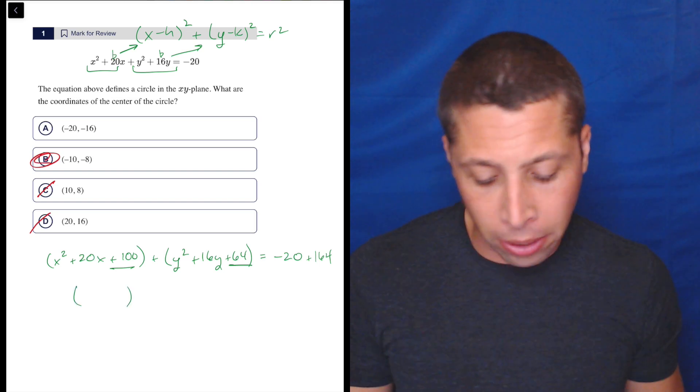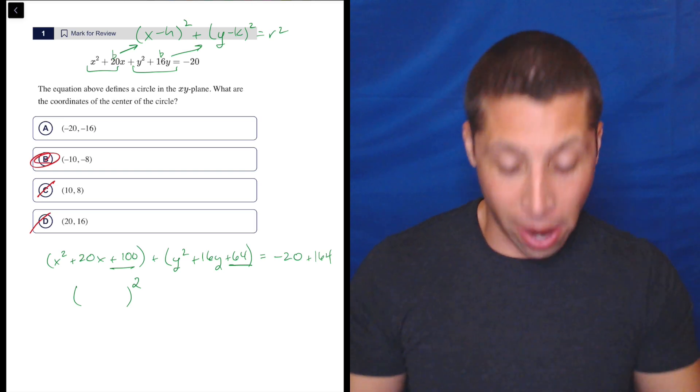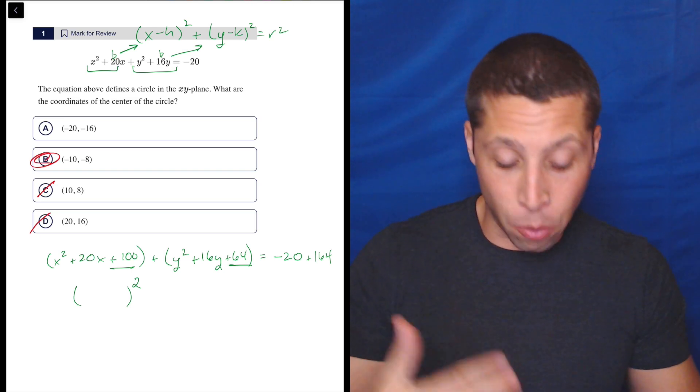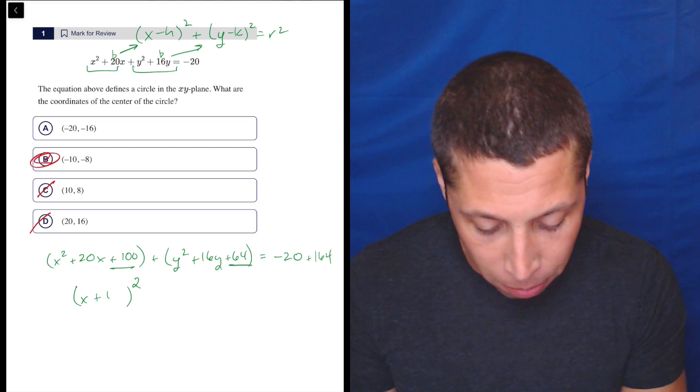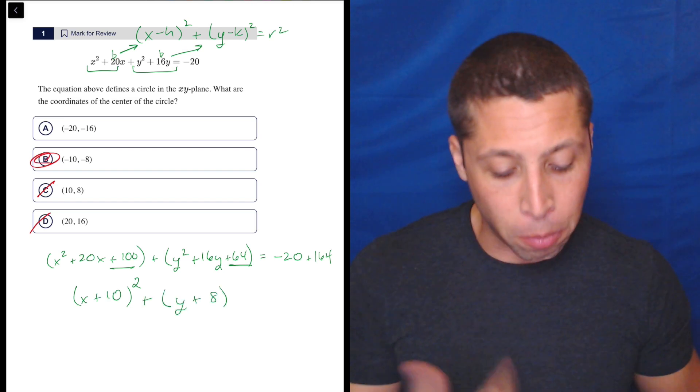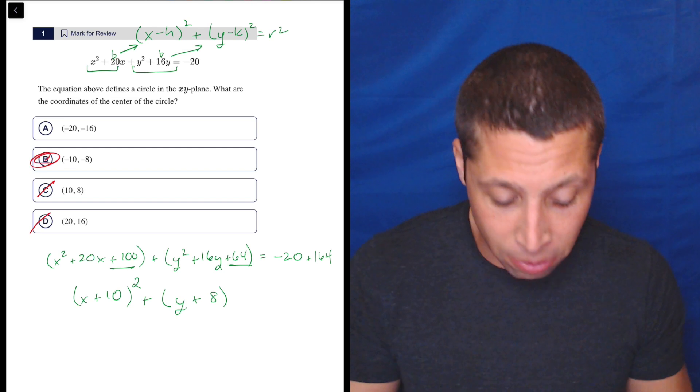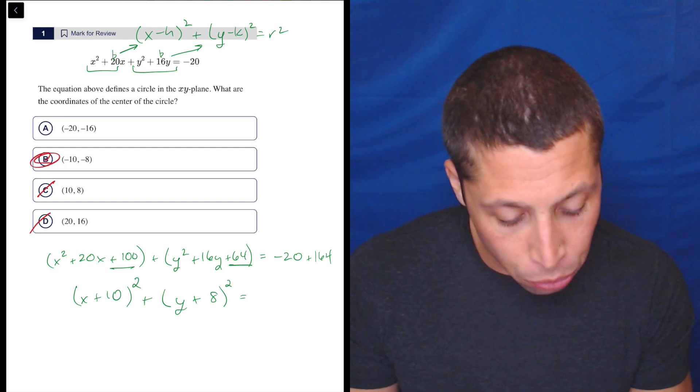Then it's just a matter of simplifying. Basically you're factoring, but because it's called completing the square, we know we're going to get the same factor twice squared. So you can think what multiplies to 100 and adds to 20, but it's easy. It's the same thing twice. It's (x plus 10). Then here it's (y plus 8), right? What multiplies to 64, adds to 16. The whole reason we did this is it's the half of b term. So that's that. And that is equal to 144.